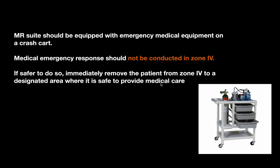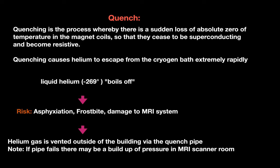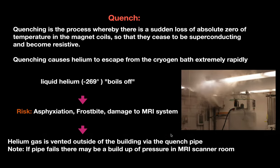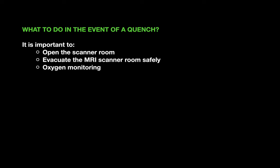Quenching is the process whereby there is sudden loss of absolute zero temperature in the magnetic coil — a sudden loss of the magnetic field in the superconducting magnet due to rapid warming. This can occur if the cryogenic system fails. The release of stored energy during quenching can be hazardous and may damage the magnet and surrounding equipment. Risks include asphyxia and frostbite. Helium gas is vented outside of the building via a quench pipe; if the pipe fails, there may be a pressure buildup in the scanner room. In such an event: open the scanner room, evacuate safely, and perform oxygen monitoring.